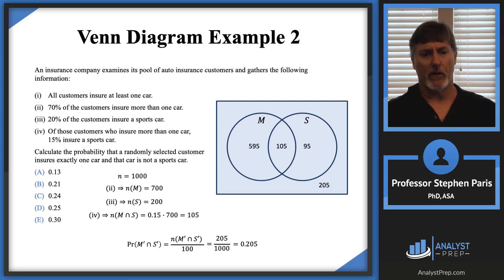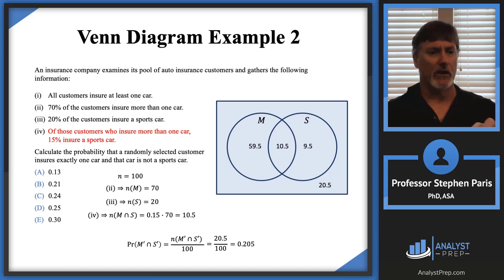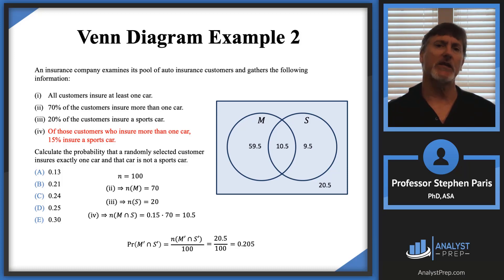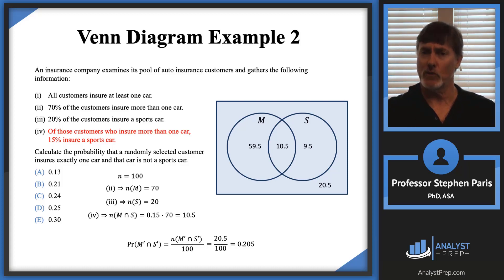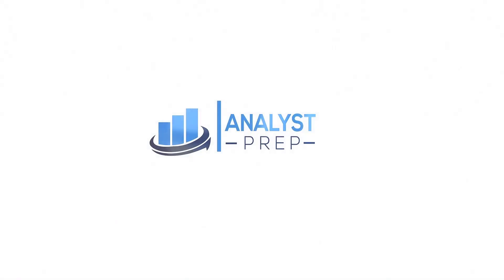One last comment: statement four in this problem is actually a conditional probability, which is a bit beyond basic probability. We haven't covered it yet, but I'll do an example with conditional probabilities in a later video using a Venn diagram — I think it makes it a lot easier. See you in the next video.